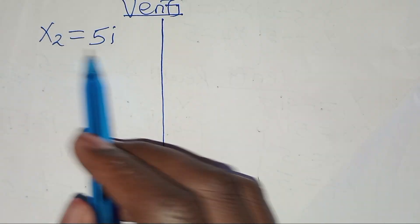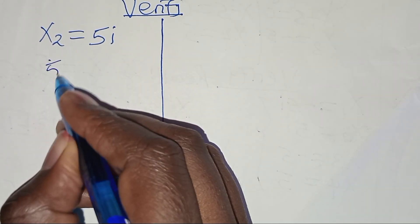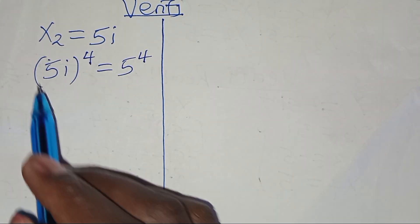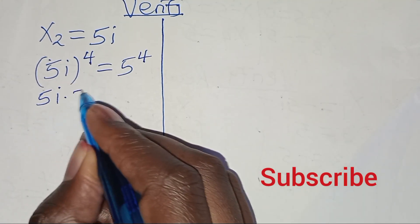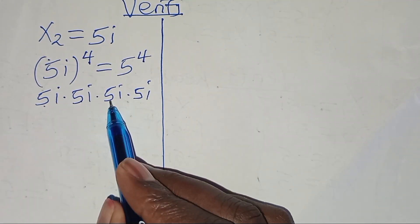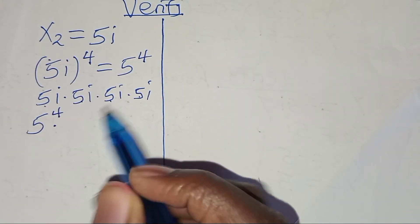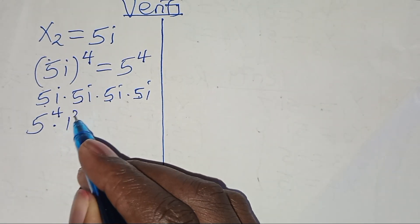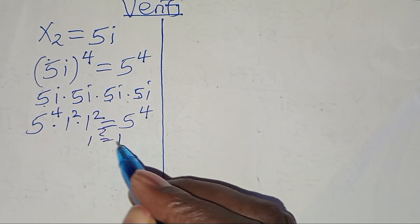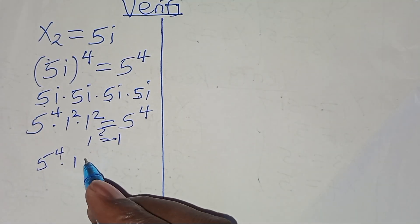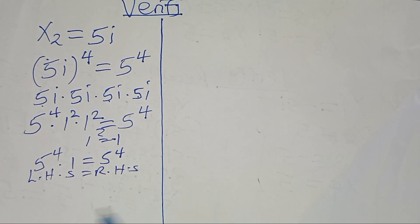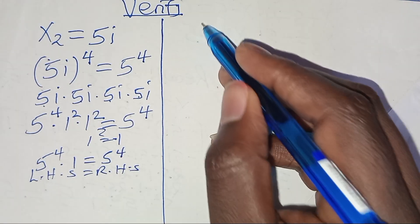For x₂ equals 5i: substituting gives 5i to the power 4, which is 5 times 5 times 5 times 5, equal to 5 to the power 4, times i squared times i squared. Since i squared equals negative 1, this is 5 to the power 4 times 1, which equals 5 to the power 4. The left hand side equals the right hand side, so x₂ satisfies the equation.